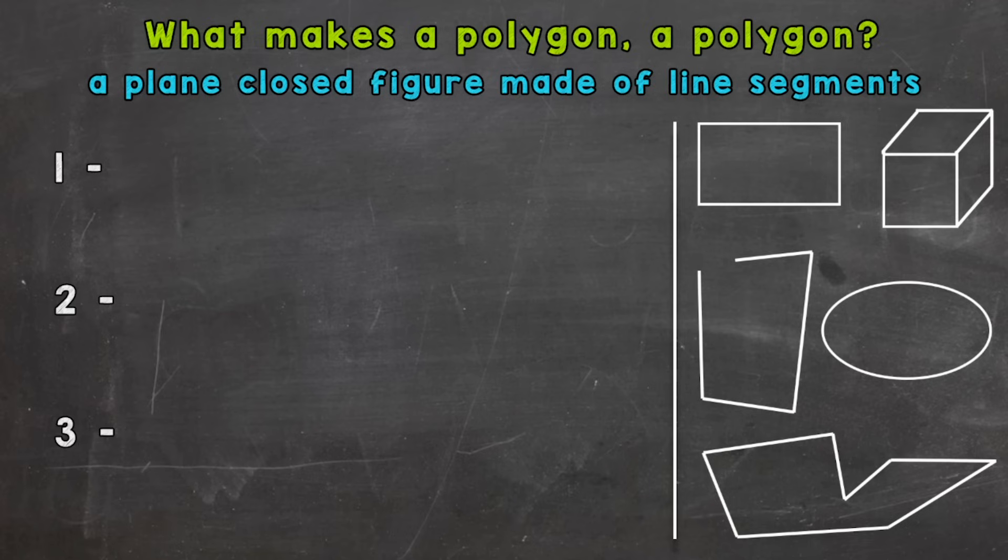A polygon is a plane closed figure made of line segments. We're going to break that definition down and make it a little easier and simpler.